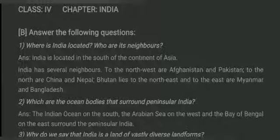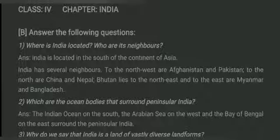Now we are going to look at the second question: which are the ocean bodies that surround peninsular India? The Indian Ocean on the south, the Arabian Sea on the west, and the Bay of Bengal on the east surround peninsular India.